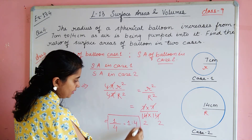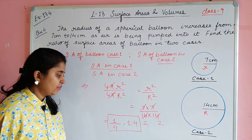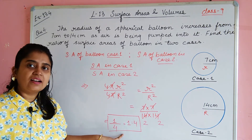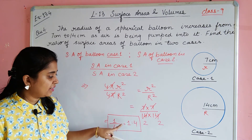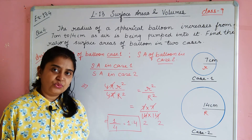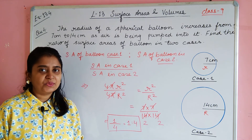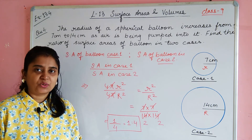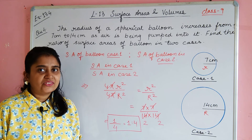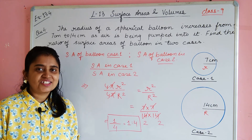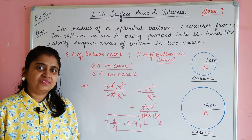So surface area का जो ratio निकल के आया है, that is 1 is to 4. If you have any doubts, you can message me in the comment box. If you are benefited by these videos, then please like, share and subscribe my channel. Thank you.